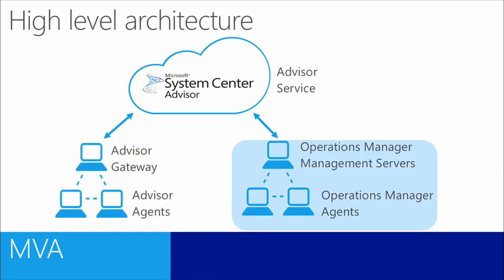Moving on to the Attached Service environment, you will notice that the Operations Manager servers perform a similar role as the Advisor Gateway. And instead of having to install the Advisor agents, you can reuse the already deployed Operations Manager agents. Once you enable Advisor as an attached service in Operations Manager, the OM agents will collect configuration data and send it to the management servers. These management servers will take that information and send it to the cloud for analysis, and also check for any updates on rules. Once Advisor analyzes your configuration, the alerts will be available both in the Advisor portal and in the Operations Manager console. Later in this course, I will show you how to deploy Advisor and how to enable it as an attached service in Operations Manager.